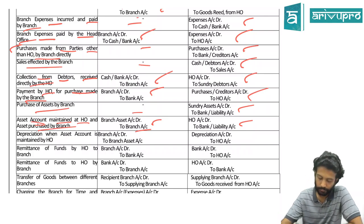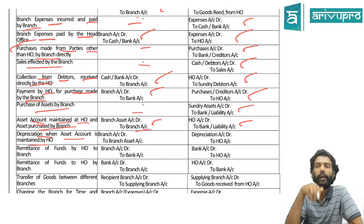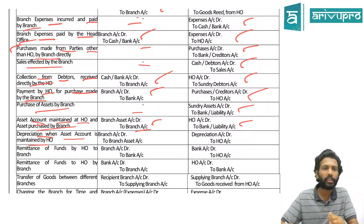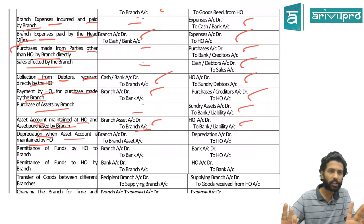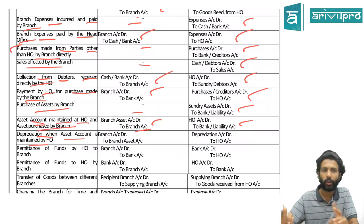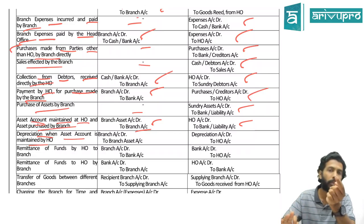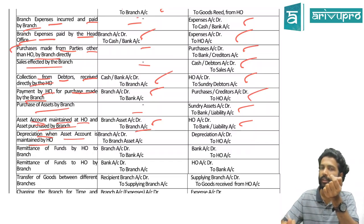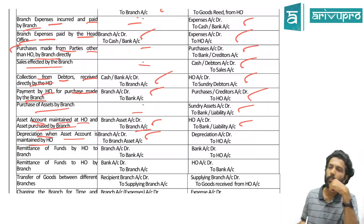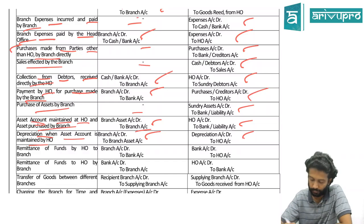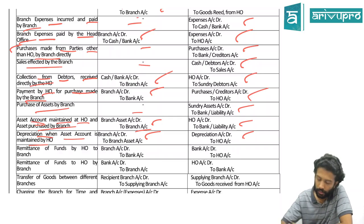Depreciation when the asset account is maintained at head office: HO maintains and can change the asset, but depreciation is the branch's expense. HO entry: Branch Account debit to Branch Fixed Asset Account. Branch entry: Depreciation Account debit to HO Account - they cannot credit the asset because the asset ledger is maintained by HO. So the branch debits depreciation and credits HO to reflect that the asset reduction is recorded at HO.